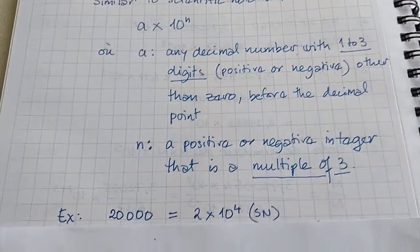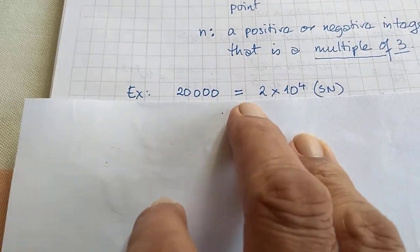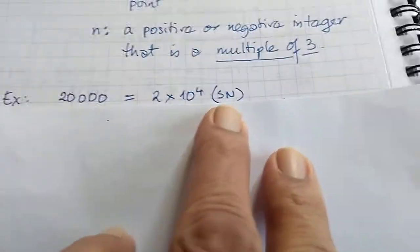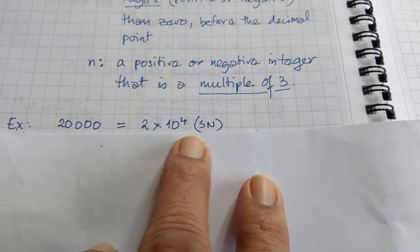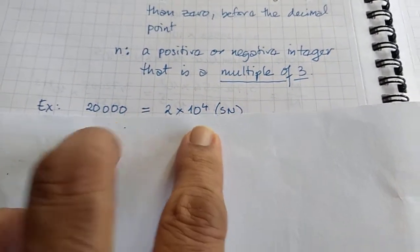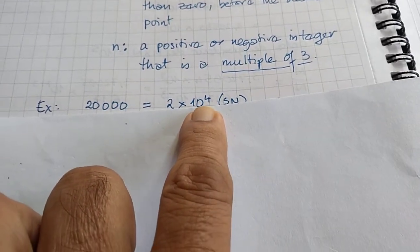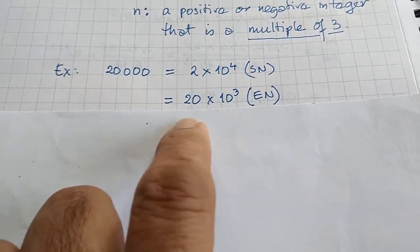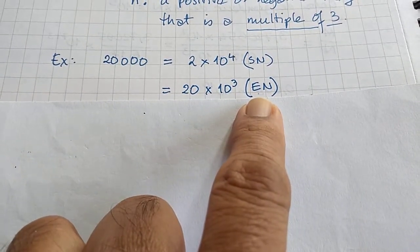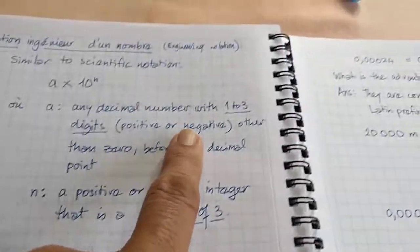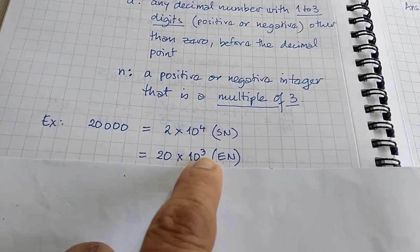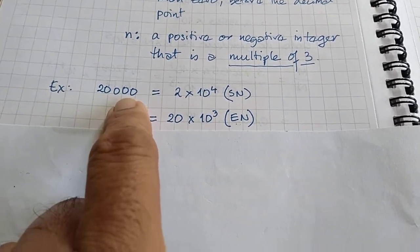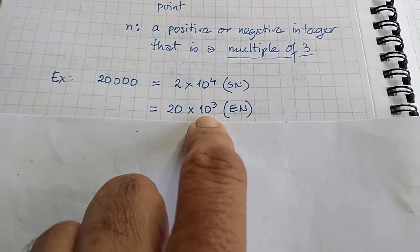Let us take examples — it will become easier. Suppose we have 20,000 = 2×10^4. This is scientific notation. How would you write it as engineering notation? Obviously 4 is not a multiple of 3, so you write it as 20×10^3. So 20 is 2 digits, which is allowed because 1 to 3 digits are permitted, and n = 3 is a multiple of 3. This is the engineering notation of this number.